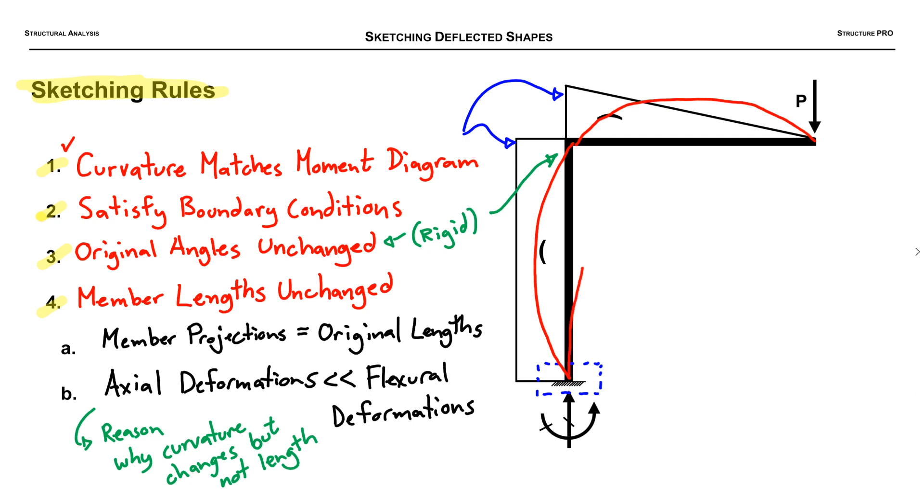Now let's try to improve upon that one by following rule number two. Satisfying boundary conditions. So now we know we have to have a 90 degree at our base boundary condition here. That's looking a little better. Let's label that 90 degree angle.